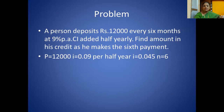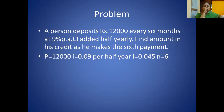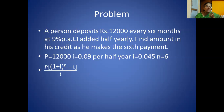Given: P = 12,000. i = 9% = 0.09 per annum, but since it is half yearly we halve it: 4.5%, so i = 0.045. n = 6 (6th payment). The formula is: P × [(1 + i)^n − 1] ÷ i, that is 12,000 × [(1 + 0.045)^6 − 1] ÷ 0.045.